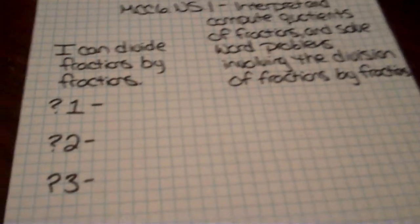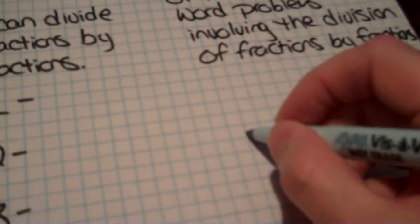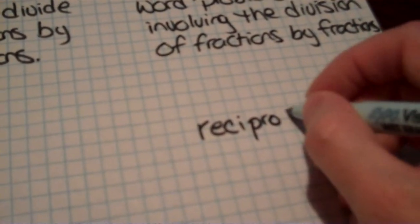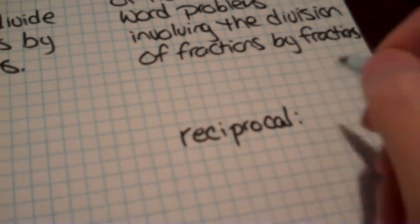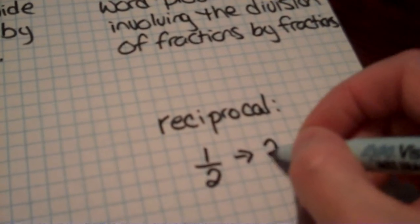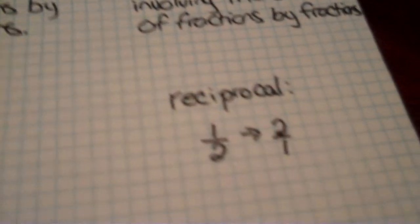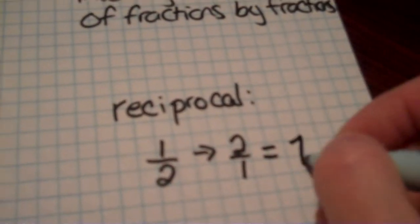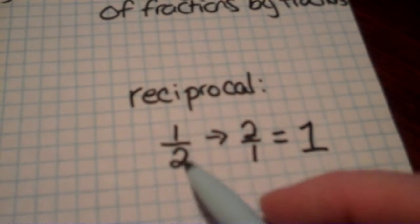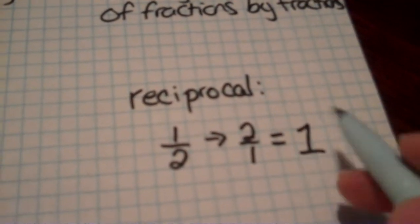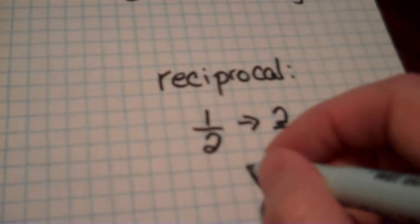Just like the song said, we need some vocabulary. Two numbers are reciprocals when their product is one, so the first word we need to know the definition for is reciprocal. The reciprocal of one half is two over one — I flip it. What you're doing is you're multiplying the opposite, which will always give you the product of one. One times two is two, two times one is two.